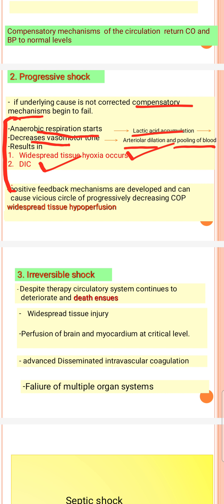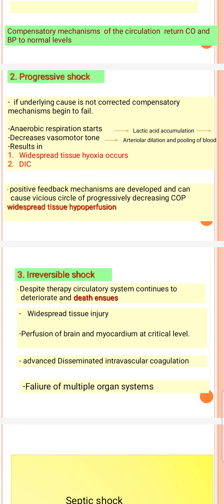In progressive shock, the compensatory mechanisms give no benefits. Anaerobic respiration leads to lactic acid accumulation, arterioles dilate, blood pooling occurs, tissue hypoxia worsens, and disseminated intravascular coagulation develops.